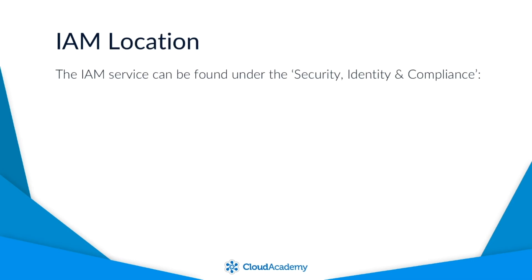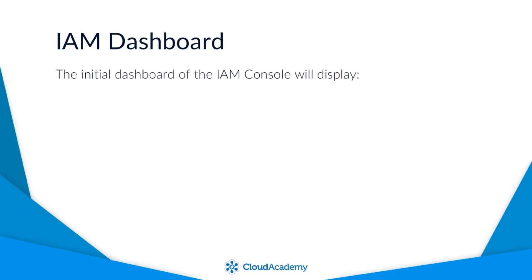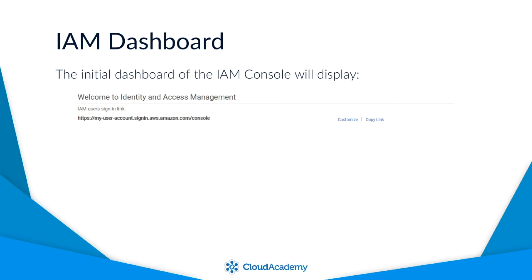From within the AWS Management Console, the IAM service can be found under the Security, Identity and Compliance category, and when accessed it will take you to the IAM dashboard. From here, and if you have the correct permissions, you will be able to administer all security from an IAM perspective. The initial dashboard displays information relating to the IAM user's sign-in link — a URL that you can send to users who need to gain access to your AWS Management Console. This link can be customised by clicking on the Customise button to make it easier to remember and read. If you had multiple AWS accounts, this customisation will help you distinguish between your accounts.